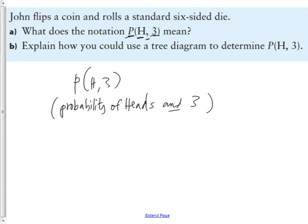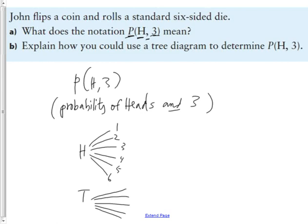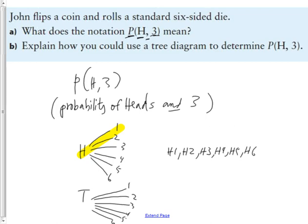Could you use a tree diagram to get that answer? Yes. If you put down H and T — heads and tails — then if it was heads, you could have a one, two, three, four, five, or six. And if you did tails, you could have the same events. So there are six possible outcomes if you had heads first: heads one, heads two, heads three, heads four, heads five, and heads six.